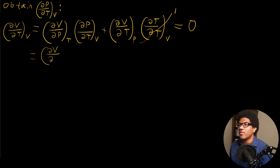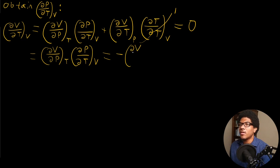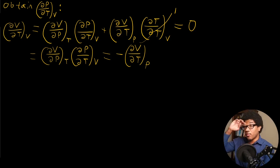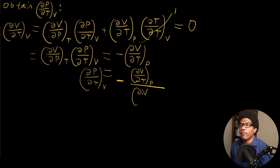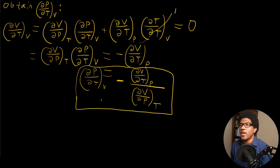So we move the second term over to the right-hand side of the equal sign. We get (∂P/∂T) at constant volume equals negative (∂V/∂T) at constant P — basically subtracting that term from both sides. Then we divide by the other partial derivative. So we end up with (∂P/∂T) at constant volume equals negative (∂V/∂T) at constant P, over (∂V/∂P) at constant T. This gives us our expression for DP/DT at constant V.